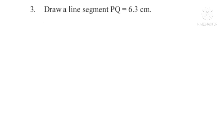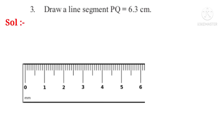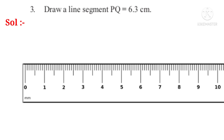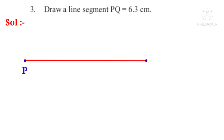Now let us do the third problem. Draw a line segment PQ equal to 6.3 centimeters. Solution. Take a scale or ruler. Starting from zero, draw a line — three lines after six, that means three millimeters after six centimeters. Now name the initial point as P and the final point as Q. So the line segment PQ is of length 6.3 centimeters.